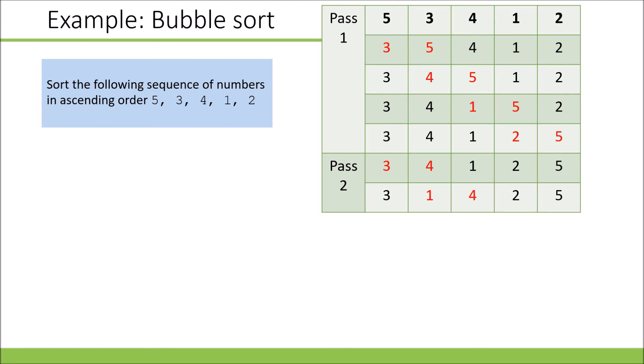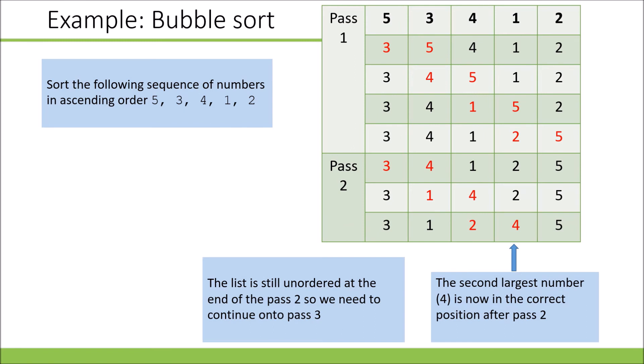Then we compare four and one - those need swapping. We compare four and two - those need swapping too. Now the second largest number, four, is in the correct position after pass two.